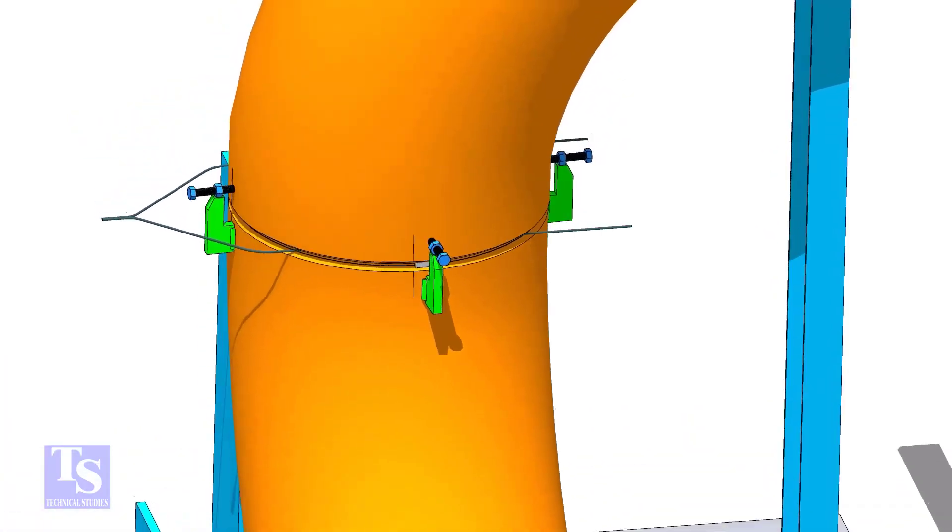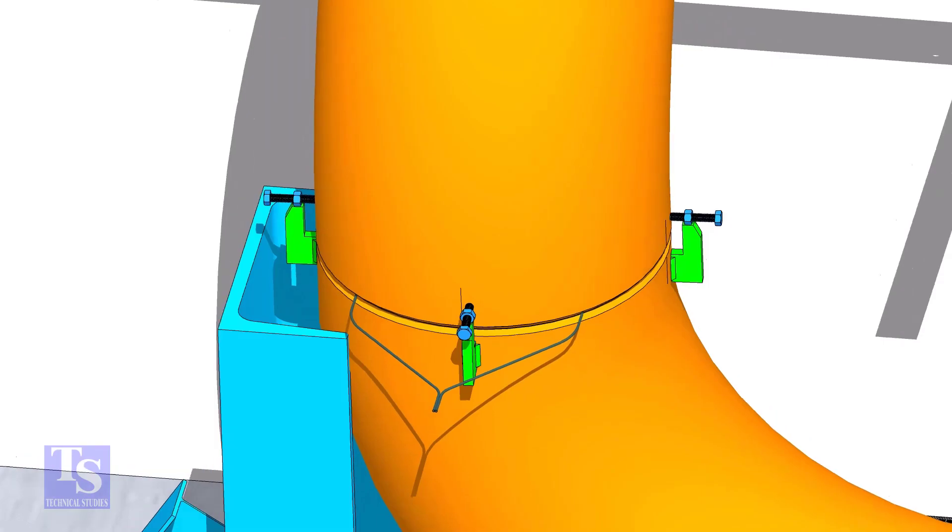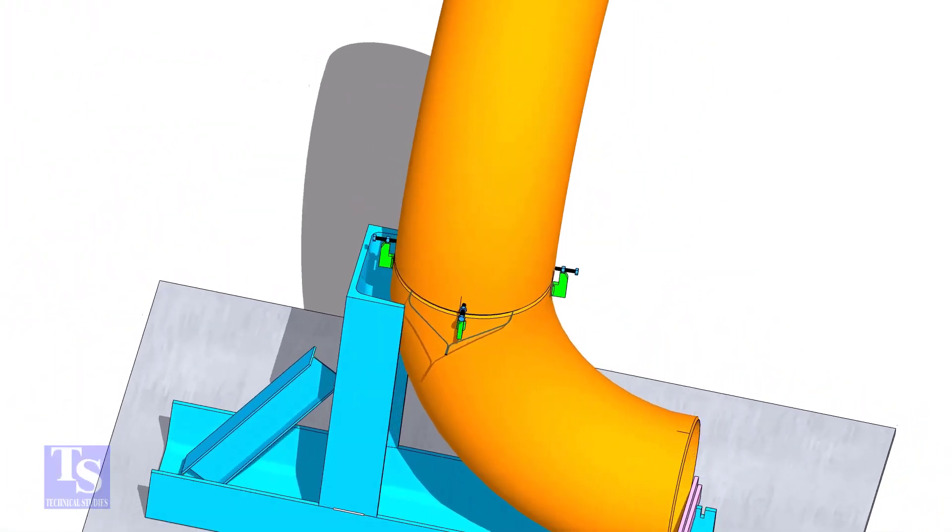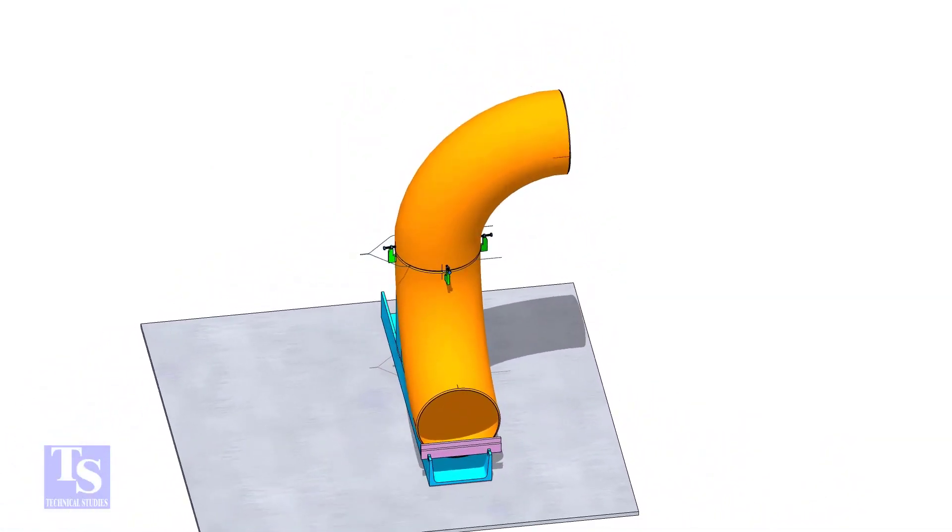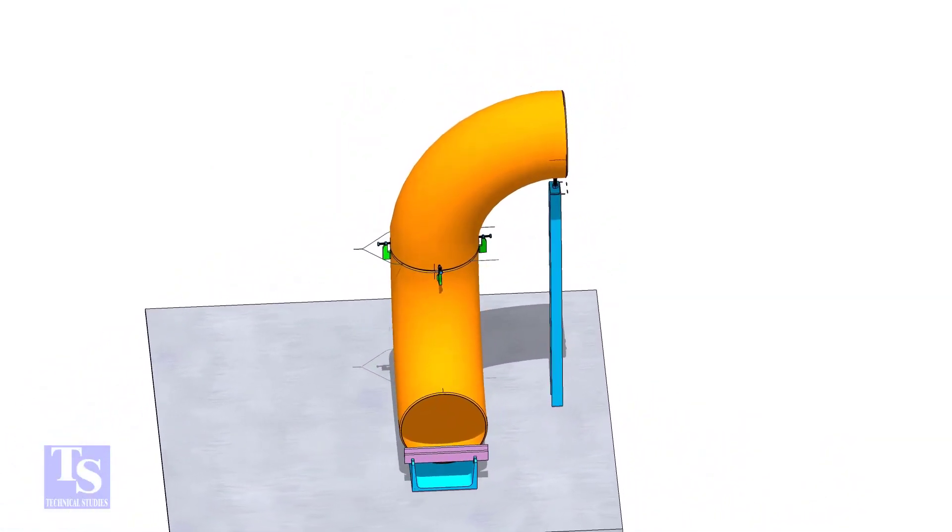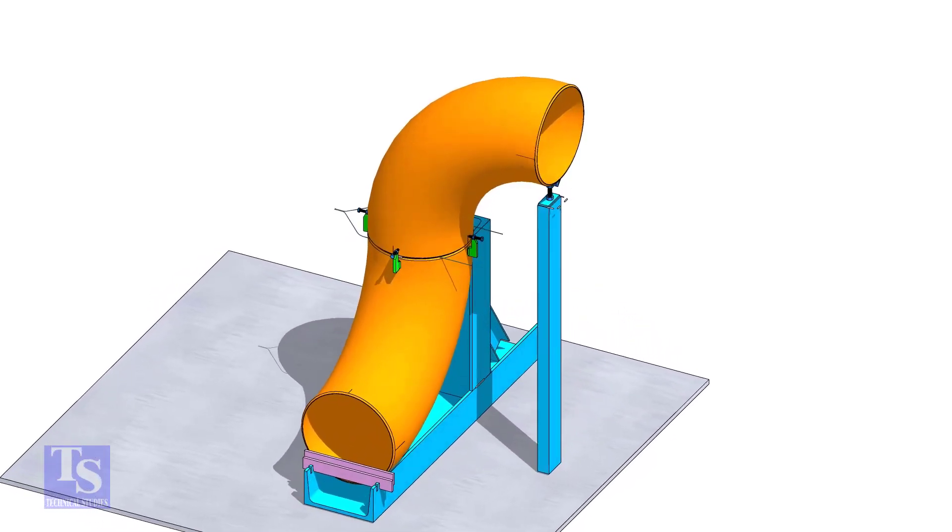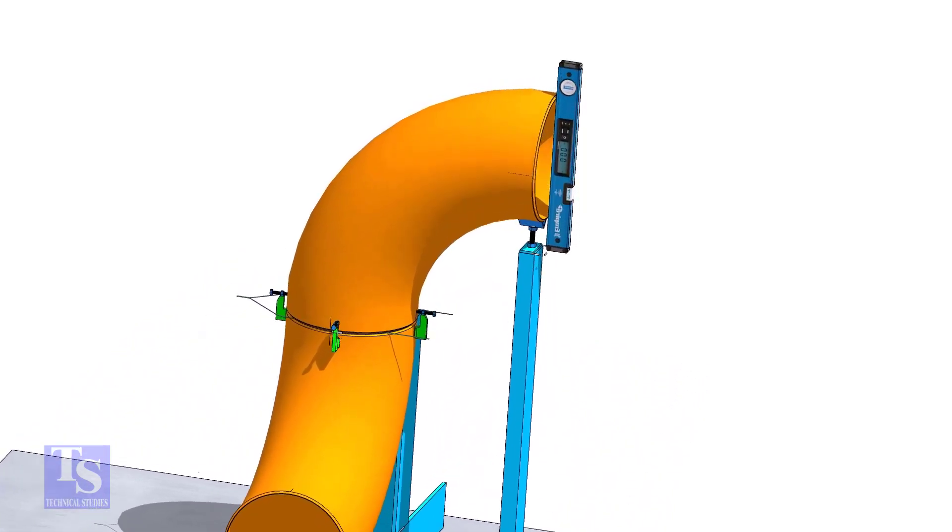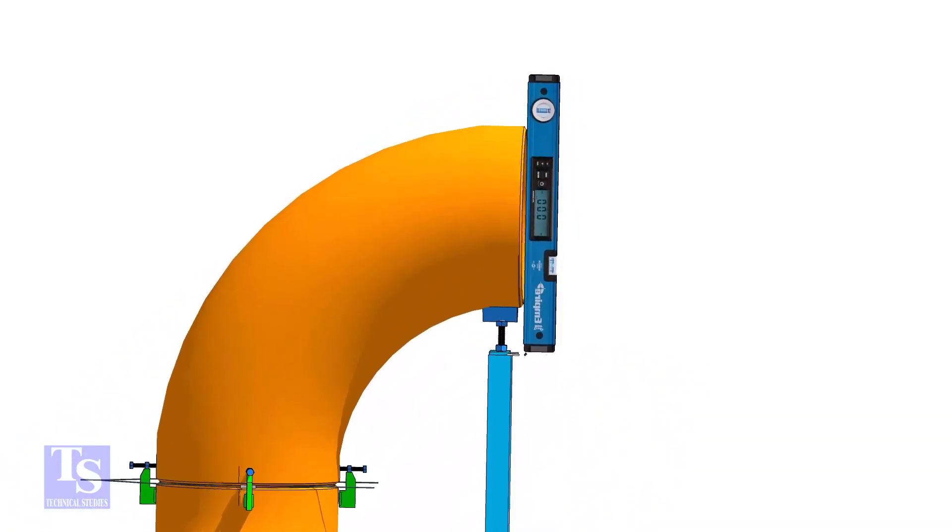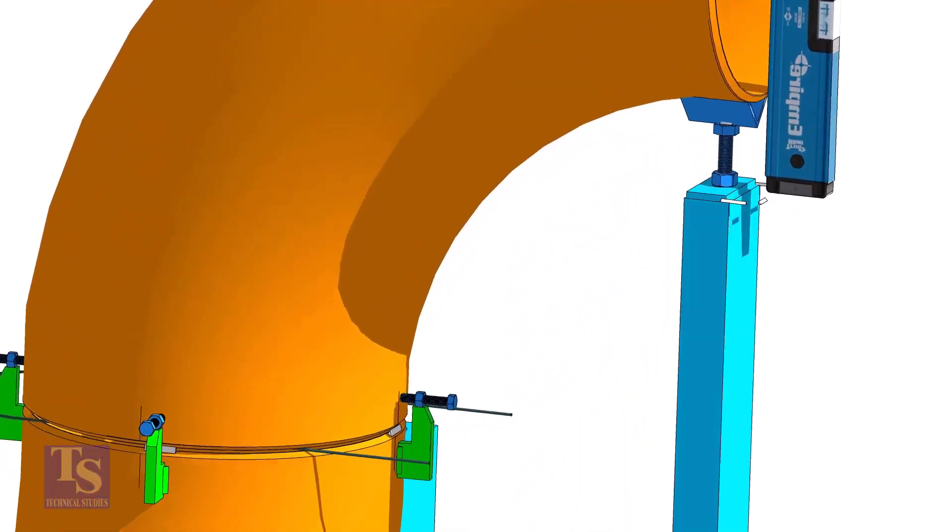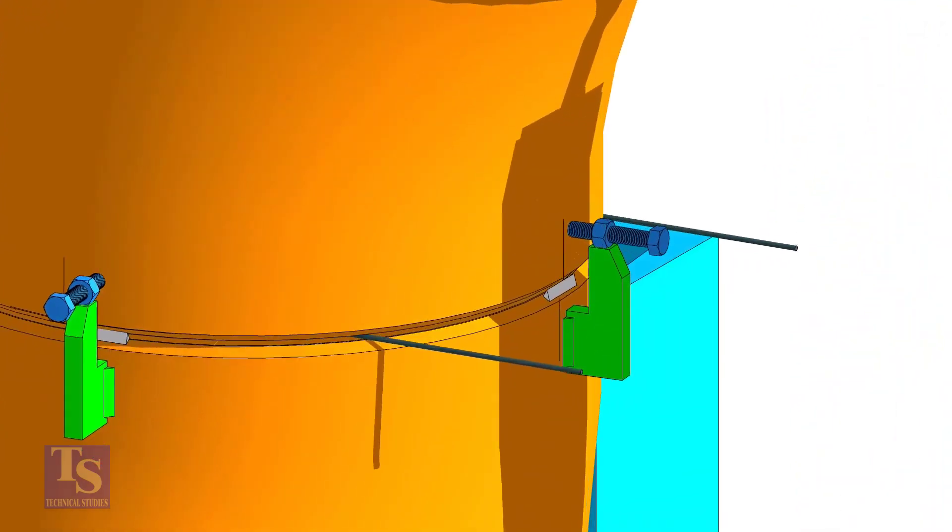Tack weld on the near and the far sides of the joint as shown. Check the verticality of the elbow face. Tack weld on this side and the back side of the elbow.